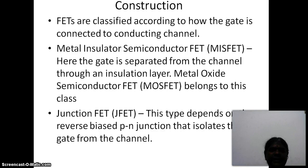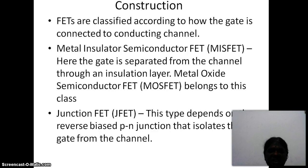The first category is MISFET — metal insulator semiconductor FET. Here the gate is isolated from the channel through an insulation layer. Metal oxide semiconductor FET belongs to this class. In the case of JFET or junction FET, the gate is isolated from the conducting channel through reverse bias of the PN junction.